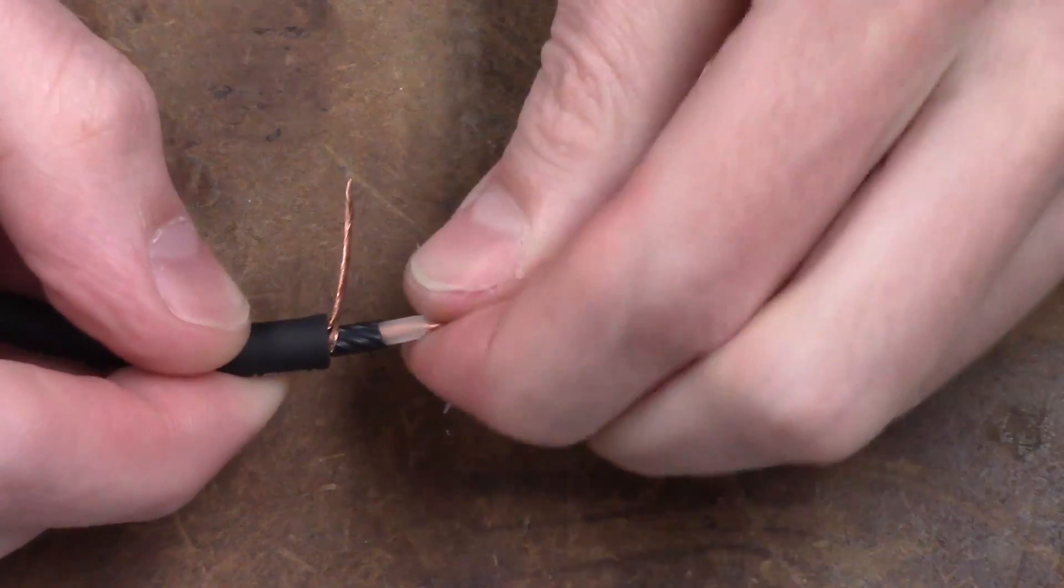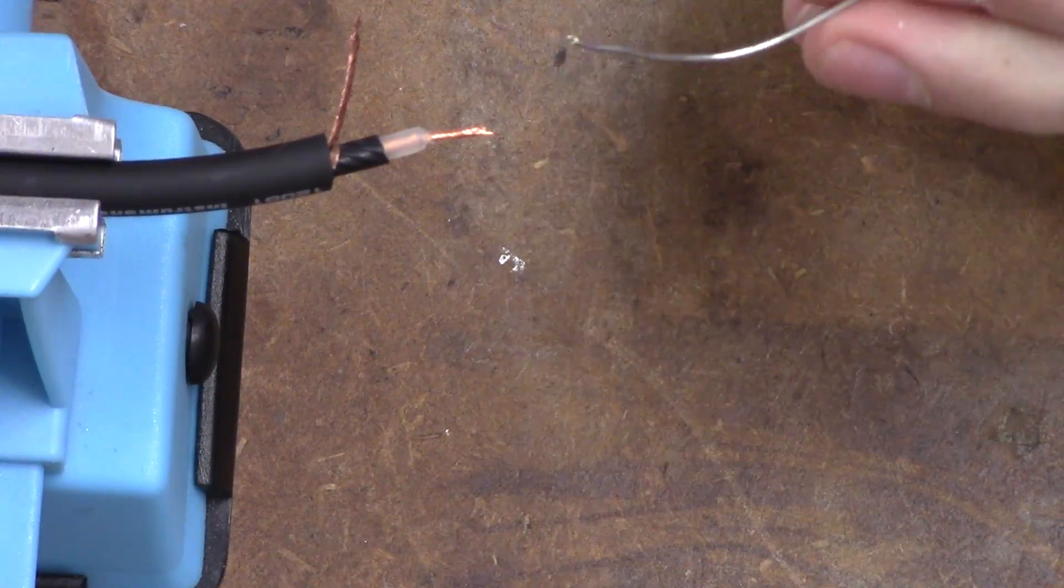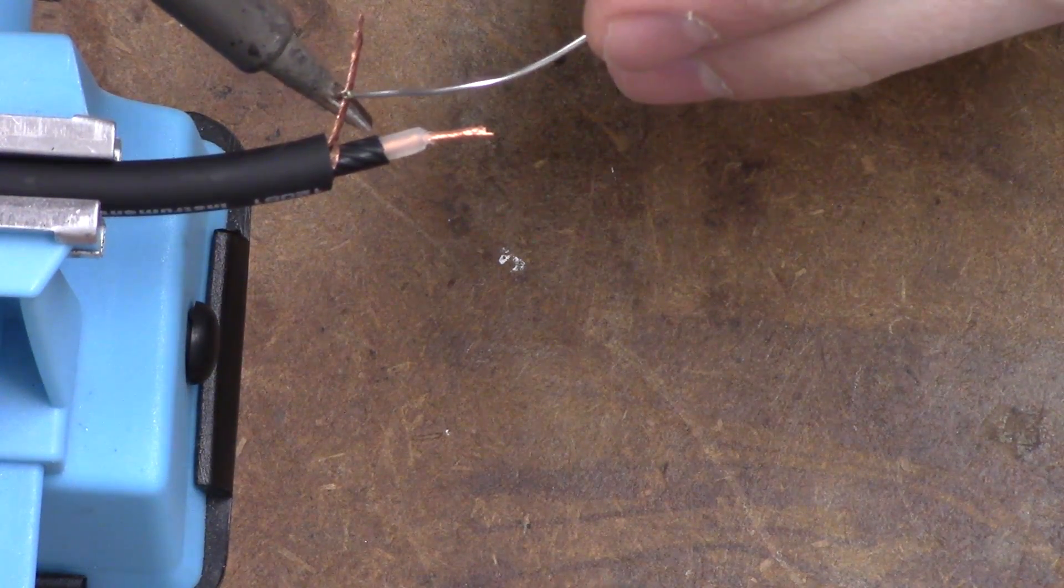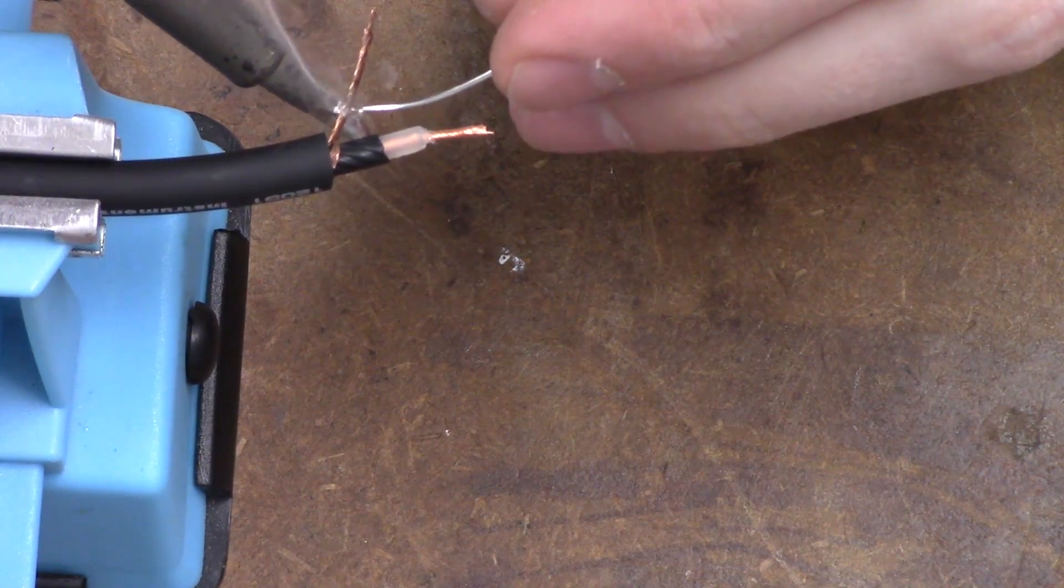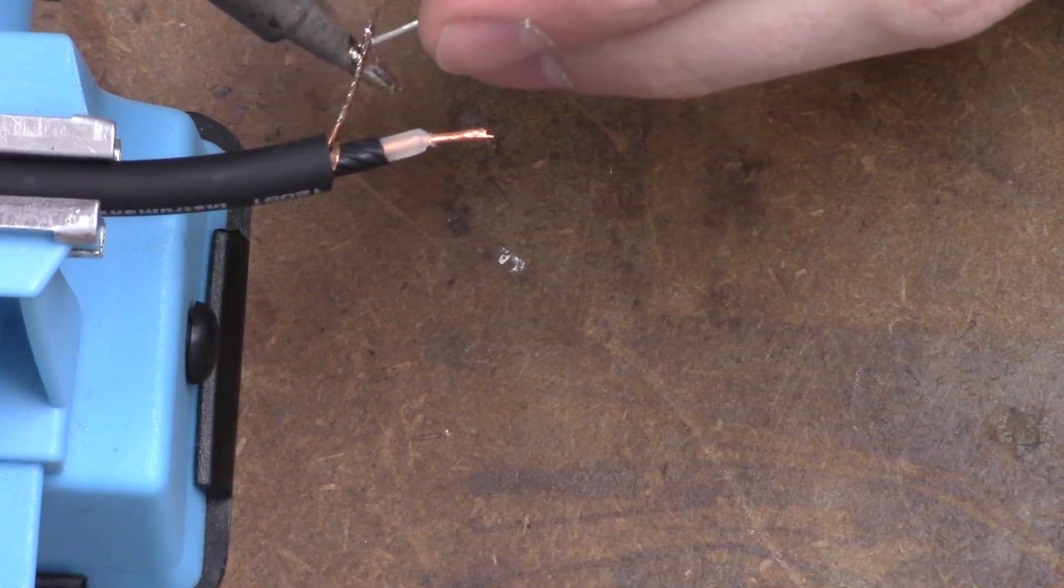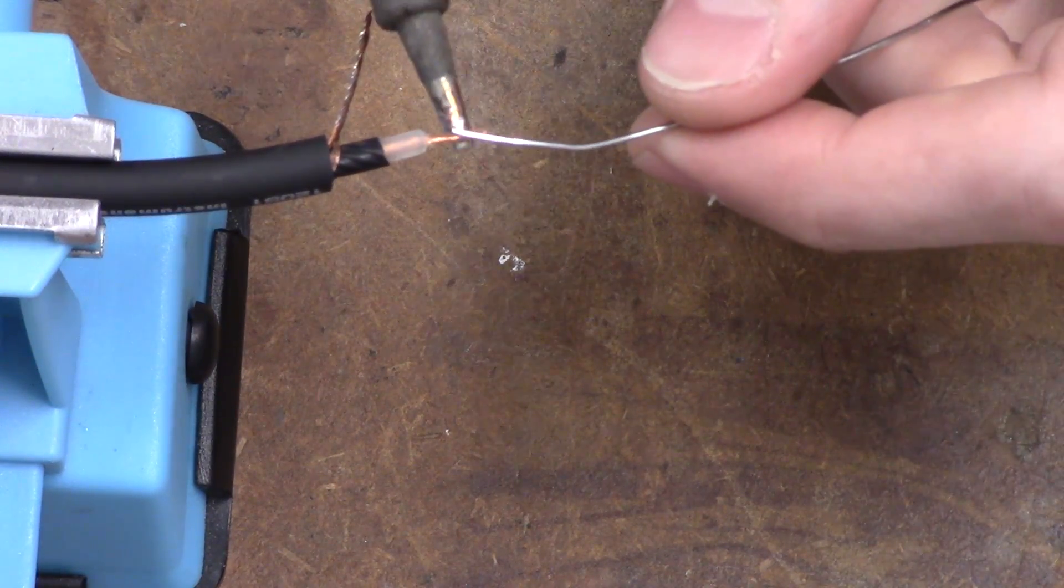Now we are going to tin the copper shield and the center conductor. It will help if you have something to hold the cable in place, like a vice grip or a pair of helping hands. We sell those. First, tin the length of the outer shield. Now repeat the process for the center conductor.